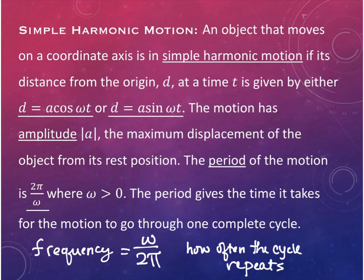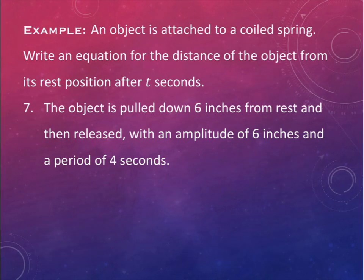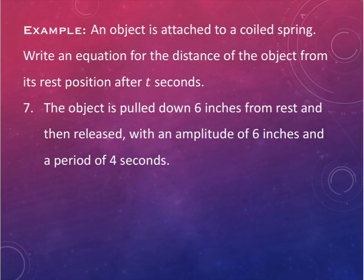Our first example involves a spring. An object is attached to a coil spring - it can either be at rest and bouncing gently, or you pull it down and let go. On this problem, the object is pulled down six inches from rest and released.